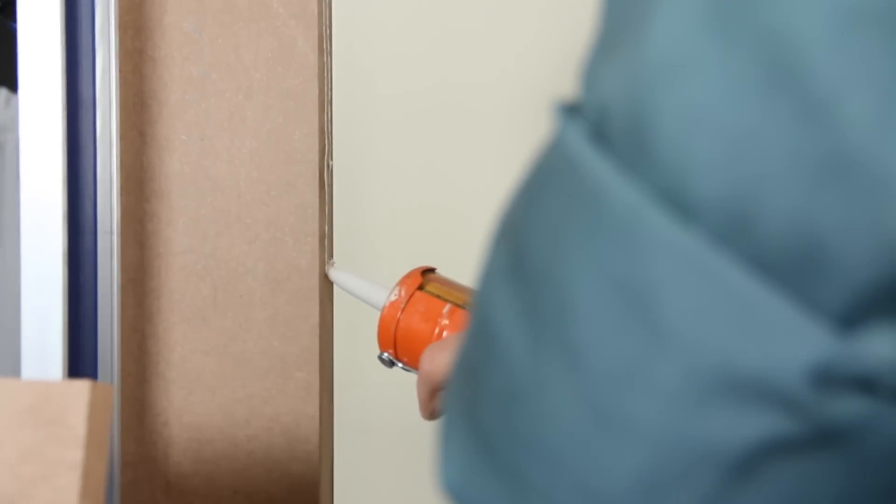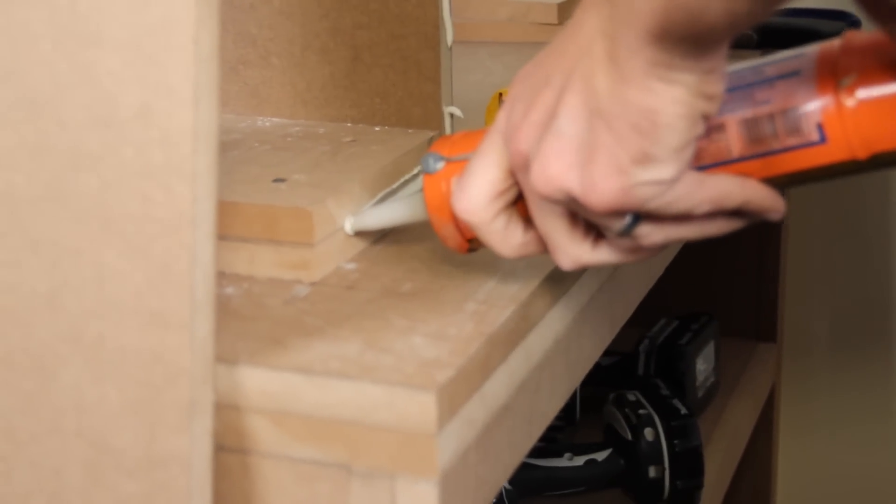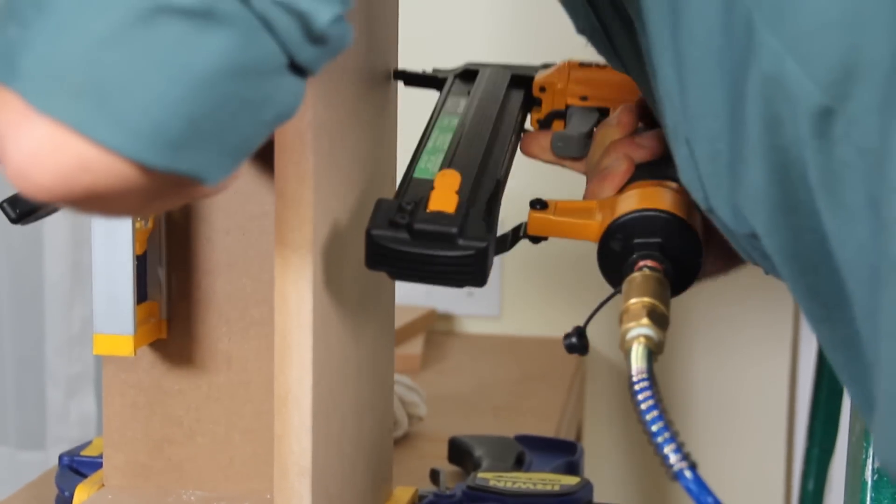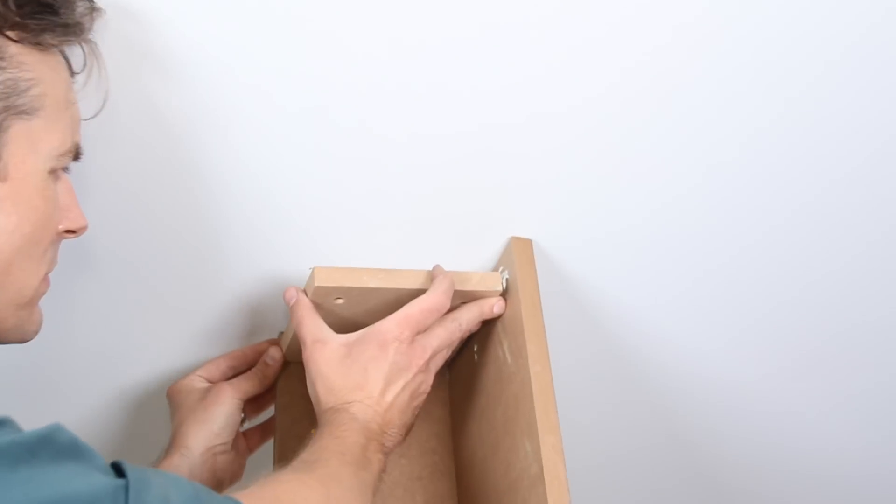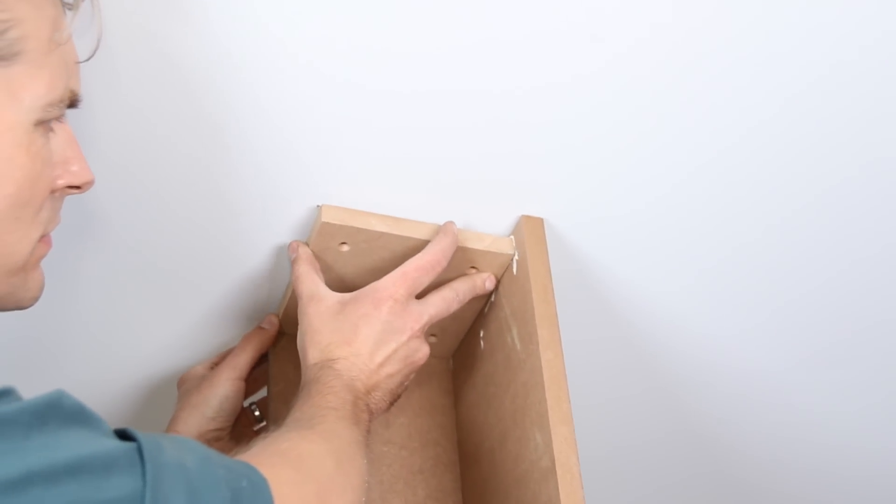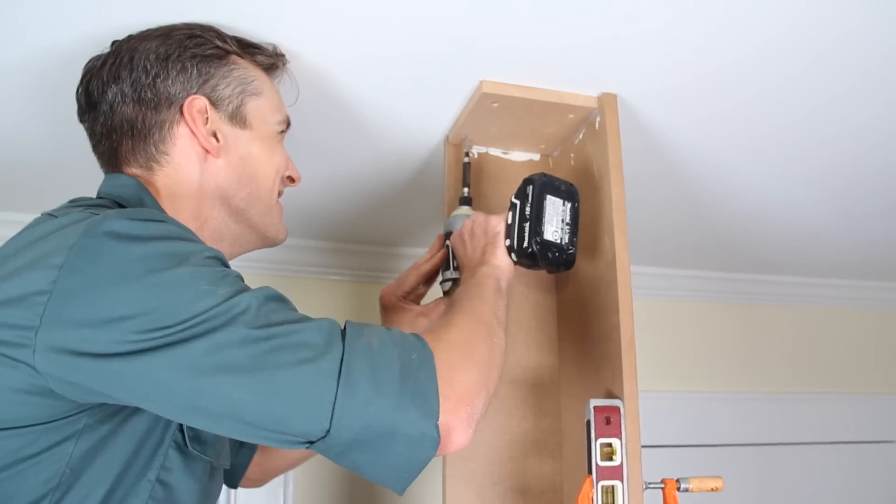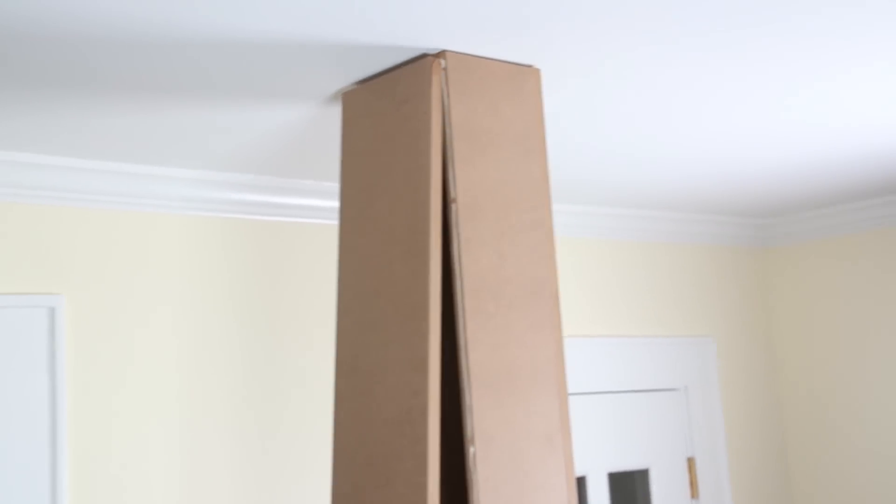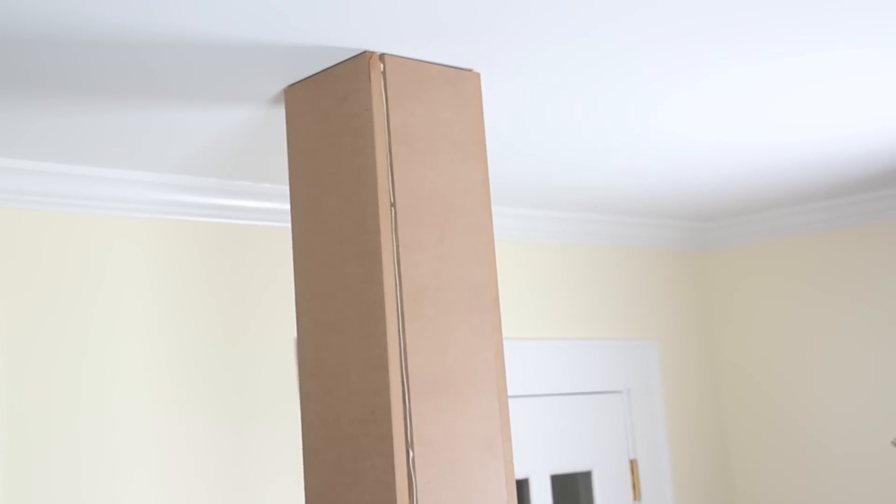Next, glue along the edge of an abutting panel and join the two to form a corner. Then nail them together with your brad nailer. The upper nailing block goes right in the crook of this column assembly.